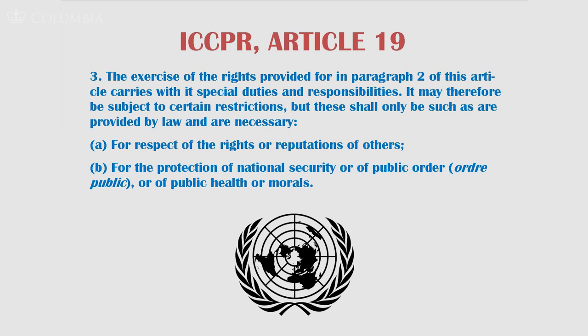Article 19 of the International Covenant on Civil and Political Rights identifies five grounds grouped under two categories. Ground one: for the respect of the rights or reputations of others. Ground two: for the protection of national security, or of public order, or of public health or morals. The American Convention and the African Declaration for Freedom of Expression offer more or less the same possible grounds for restrictions.